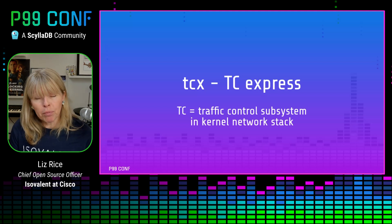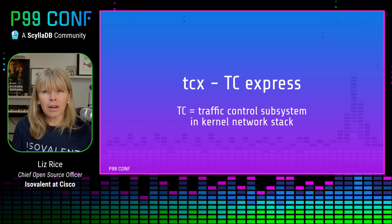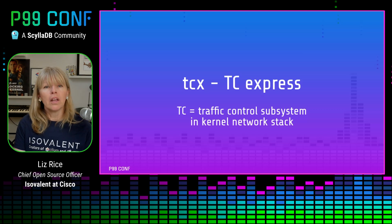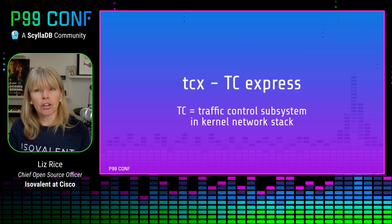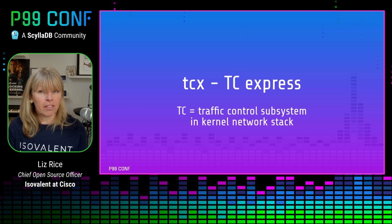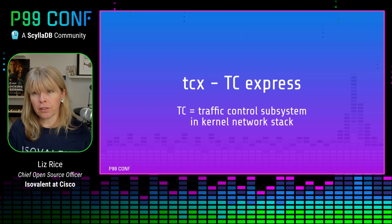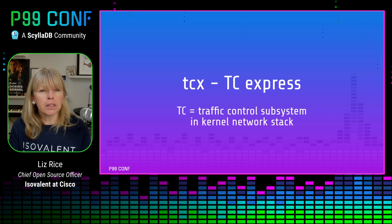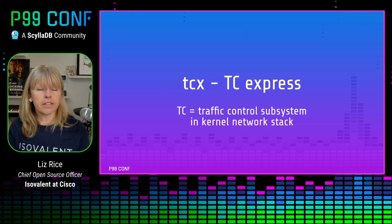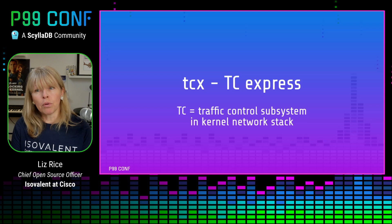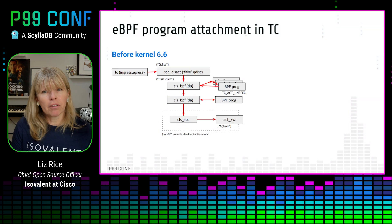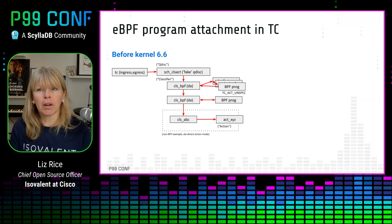In order to solve that problem, there first needed to be a complete rework of the way eBPF programs are attached within the TC, or traffic control, subsystem of the networking stack. The rework is called TCX — traffic control express — and this landed in kernel version 6.6 in 2023. TCX delivers a much better way of attaching and ordering multiple eBPF programs at the TC layer, and it adds BPF link support so that those eBPF programs can be managed properly.